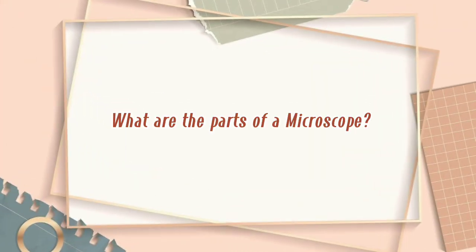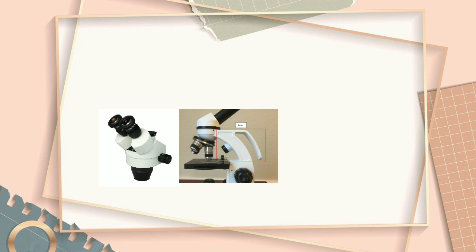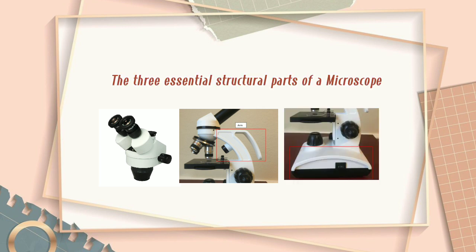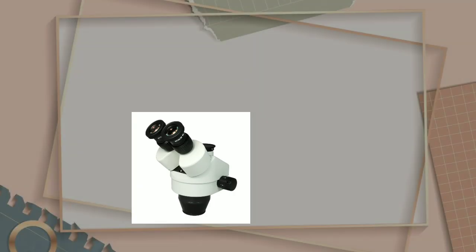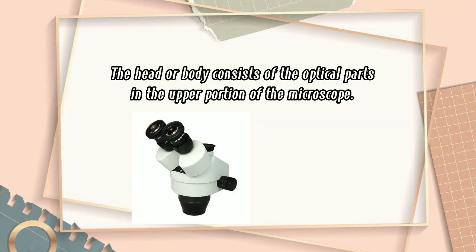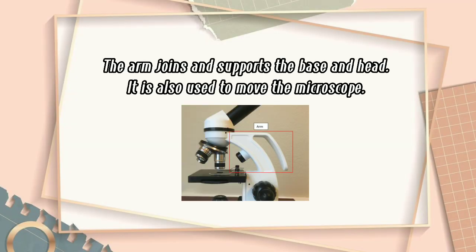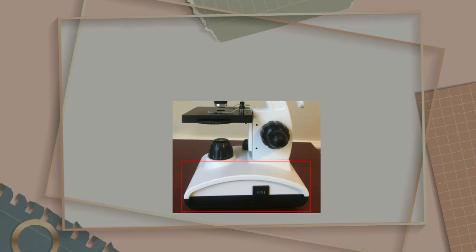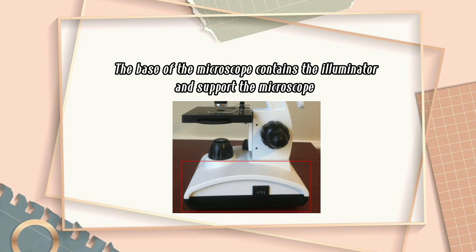What are the parts of a microscope? The head, arm, and base are the three essential structural parts of a microscope. The head, or body, consists of the optical parts in the upper portion of the microscope. The arm joins and supports the base and head, and is also used to move the microscope. The base of the microscope contains the illuminator and supports the microscope.